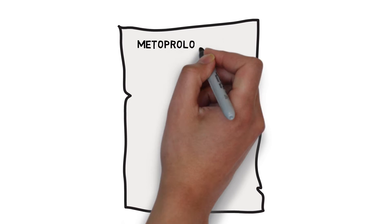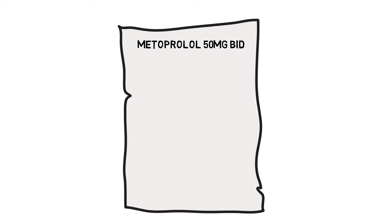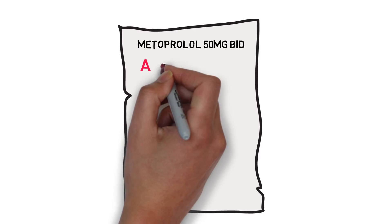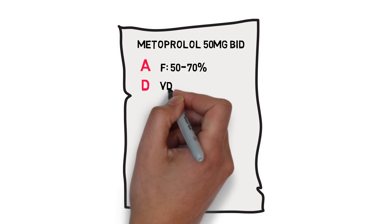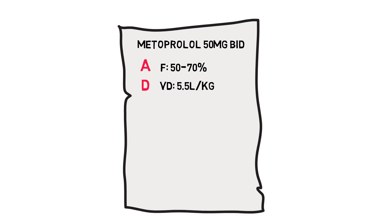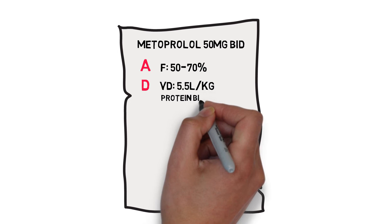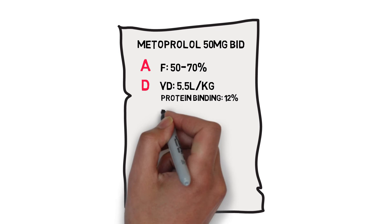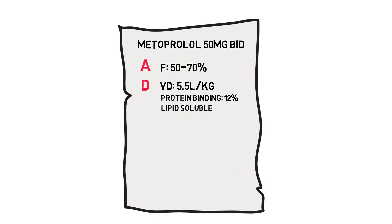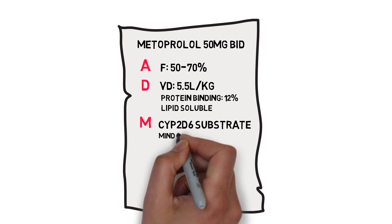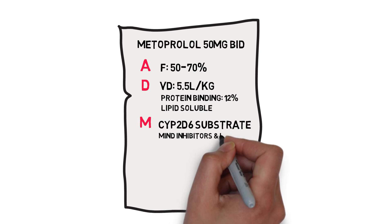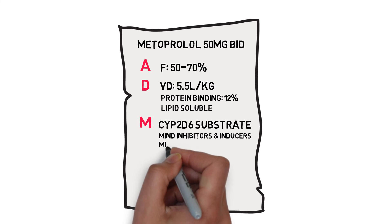Let's look at metoprolol — let's say our patient uses 50mg twice a day, meaning not slow release. The bioavailability is 50 to 70% due to a great first-pass effect. The volume of distribution is 5.5 liters per kilogram. That's quite large, so it must be low in protein binding — it is, it's only 12% — and it's probably lipid soluble. If it is, it will probably be metabolized by the liver greatly, because it cannot be excreted by the kidney directly. For metabolism, metoprolol is primarily a substrate of CYP2D6, so I should pay attention to CYP2D6 inhibitors like Prozac and inducers. Also, CYP2D6 has high genetic variability.